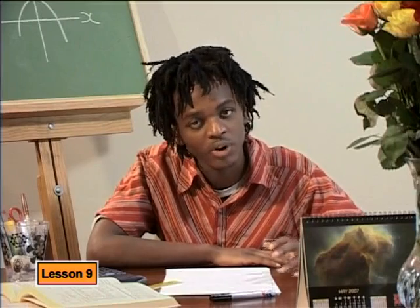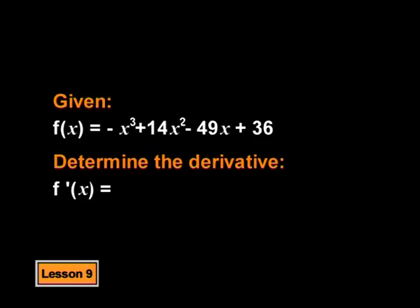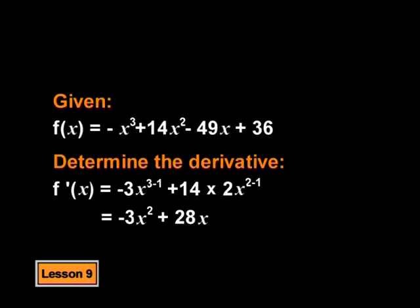Now we need to find the derivative. f dashed of x equals negative 3x squared plus 28x minus 49. The derivative of x cubed is 3x squared, 14 times x squared gives 28x, and 49 times x to the power 1 minus 1 gives 49. Finally, the derivative of a constant is 0, so we are done.